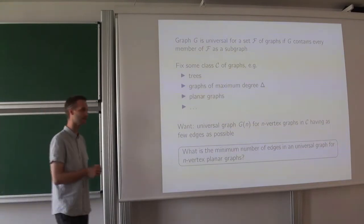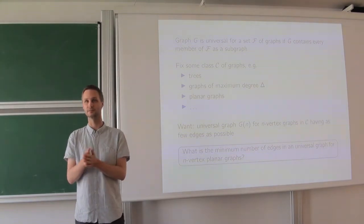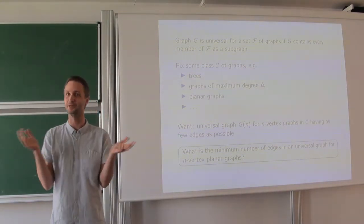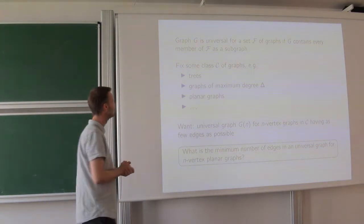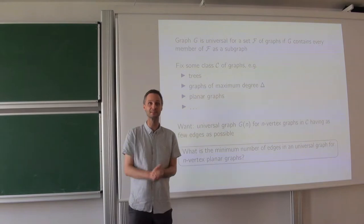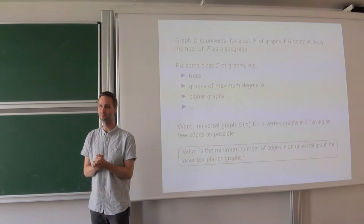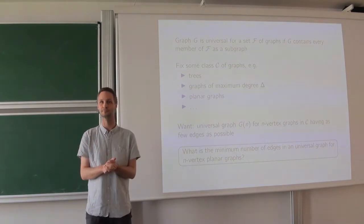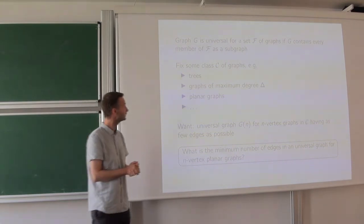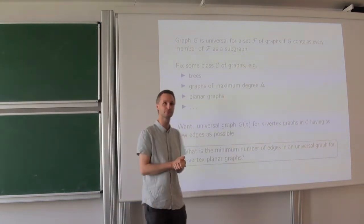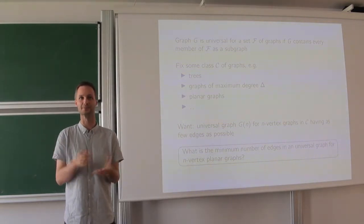So what's the problem that we are going to look at? It's called the problem of building universal graphs for, in this case, planar graphs. What is a universal graph? Take your favorite set of graphs, for instance, n-vertex planar graphs. What you want to do is build a single graph G that contains all the members of your set as a subgraph — not as an induced subgraph, just as a normal subgraph.